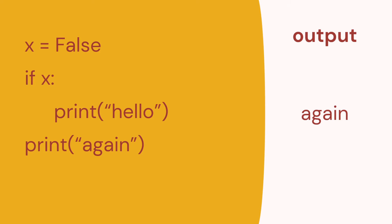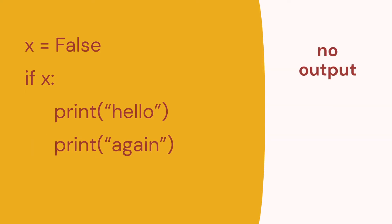Now if we change this again, you can see x is false. So because it's false, this code prints 'again' but not 'hello'. We can see that because the print statement is outside the code block of the if statement, it will still happen. So the indentation is important because we know which code is inside and which is outside the if statement. In the final example, x equals false and both print statements are inside the if statement, so there's absolutely no output.